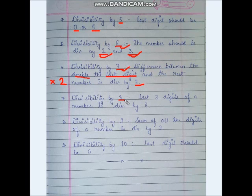Divisibility by 8: similar to divisibility by 4, but instead of 2 digits, we check the last 3 digits of the number. If the last 3 digits are divisible by 8, then the number is divisible by 8.